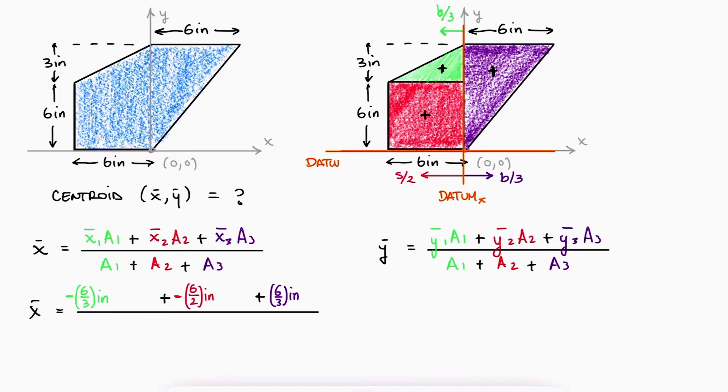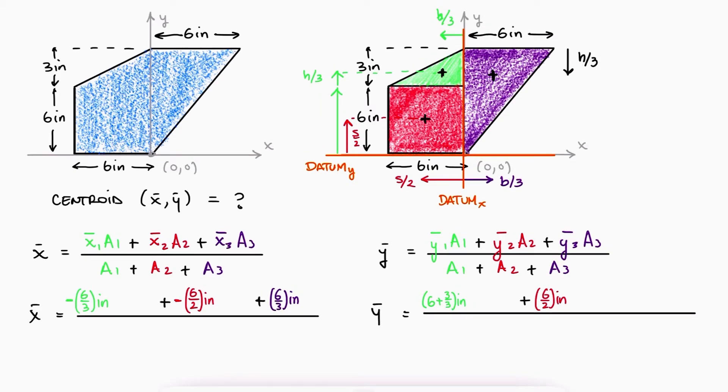For the centroid in the y direction, y bar, the distance to the centroid of the green shape will be one-third of its height plus the distance from the datum to the base of the triangle. The distance to the centroid of the red square will be the side over two, and the distance to the centroid of the purple triangle will be two-thirds of its height.